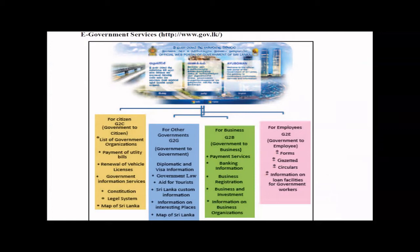For G2G, areas like tourism, visa information, government rules, and customs-related information are very important. G2B means government to business — businesses need to know rules and regulations about business registration, investment information, payment services, and tax information. G2E is for employees — information about gazettes, new vacancies, forms, and loan facilities are provided from the government to employees.